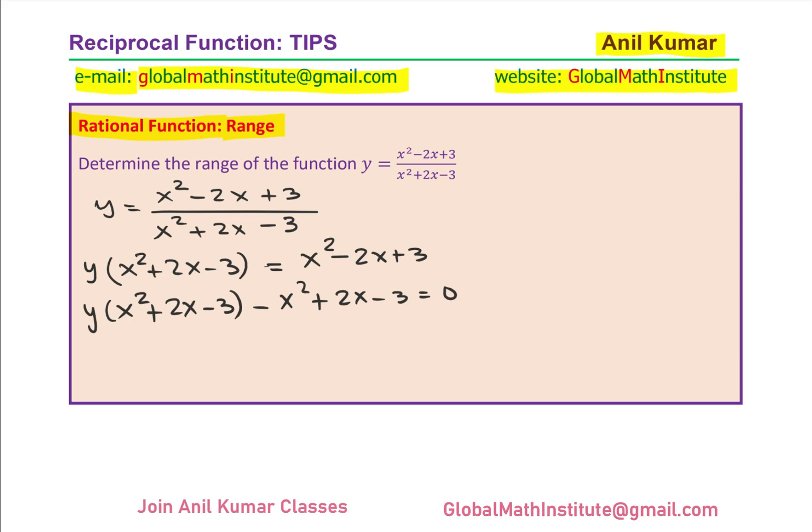Well, now, we can actually write the terms as in the quadratic form. We have yx square and minus x square. So I will prefer to write this into the quadratic form with x square. As far as the x square coefficients are concerned, we have y and minus 1. So now we can actually rewrite this equation as y x square minus x square.